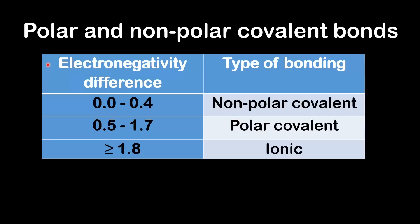Next we look at how the electronegativity difference between two atoms in a bond affects the type of bonding. If the electronegativity difference is between 0 and 0.4 units, the bonding is nonpolar covalent. If it is between 0.5 and 1.7 units, the bonding is polar covalent. And if the electronegativity difference is equal to or greater than 1.8 units, the bonding is ionic.